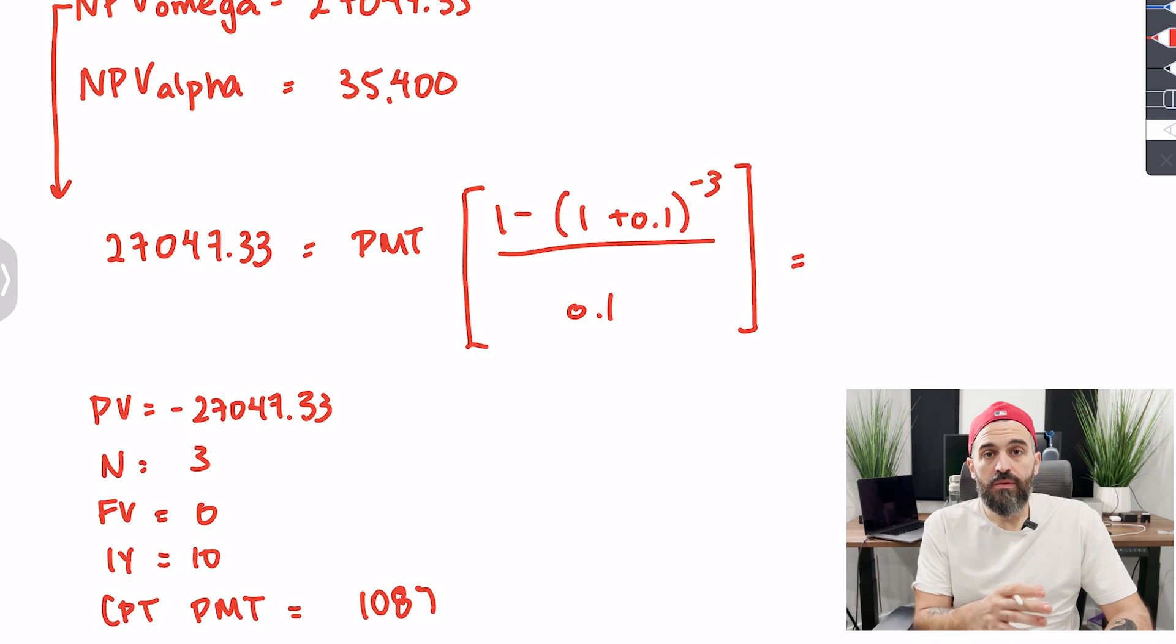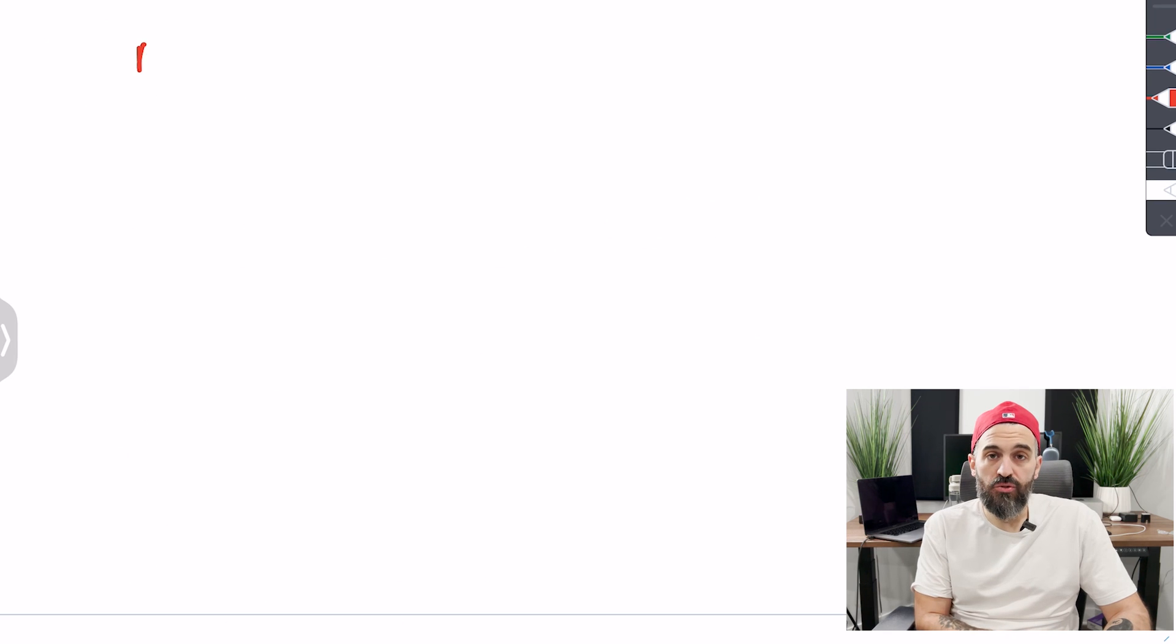For project Alpha, since it is a perpetual investment, we're going to do this using the perpetuity formula. We want to take the present value of $35,400 and convert it to a payment so we would set the present value to $35,400.